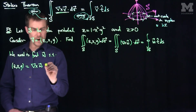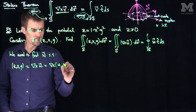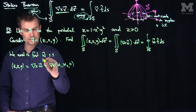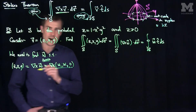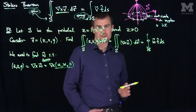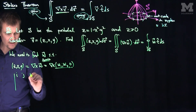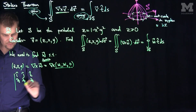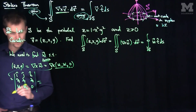We'll write W in the special form (W1, W2, 0), treating the last entry as zero. This is an ansatz — we guess that W has no k-component. The curl of (W1, W2, 0) is computed as the determinant with i, j, k in the first row; partial derivatives in the second; and W1, W2, 0 in the third.